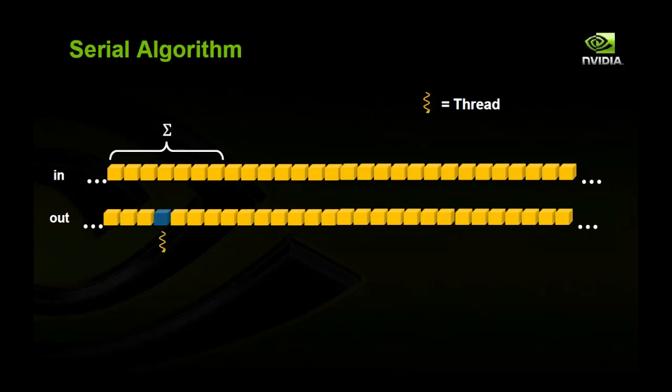So to start, let's look at the serial algorithm. In this case, we're going to be summing over seven elements. And here I have an input array and an output array. And I have marked the elements that we're going to be summing over and highlighted the element that we're going to be writing to. And as the algorithm moves forward, it will grab each value from the input array and sum them into the output array. And this is going to repeat for every element.